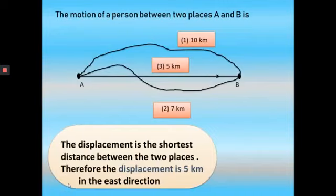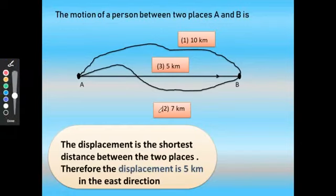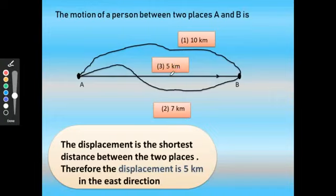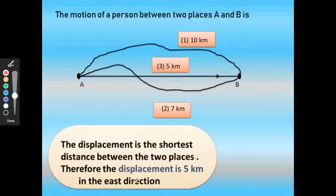The motion of a person between two places A and B is given. He travels 10 km along the first path and 7 km along the second path. The distance between A and B is 10 km for the first path, 7 km for the second, and 5 km for the third. The shortest distance between the two places is 5 km, so the displacement is 5 km in the east direction.